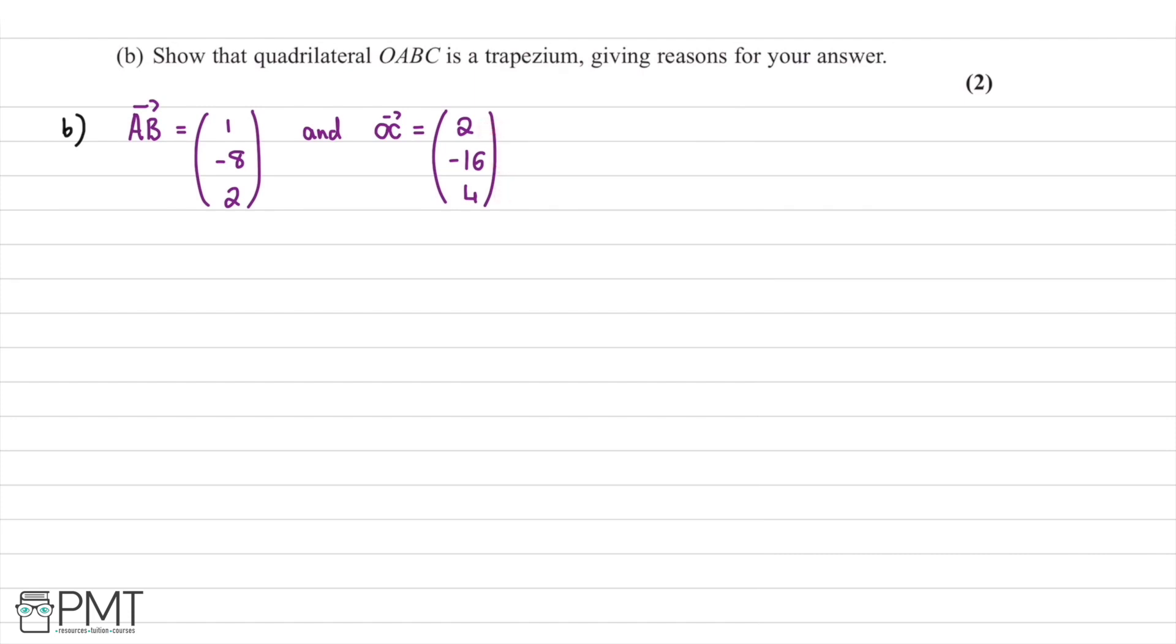What do we notice about these? Well, if we multiply 1 by 2, we get 2. If we multiply negative 8 by 2, we get negative 16. And if we multiply 2 by 2, we get 4. Therefore, an observation we make is that vector OC is equal to 2 lots of AB.